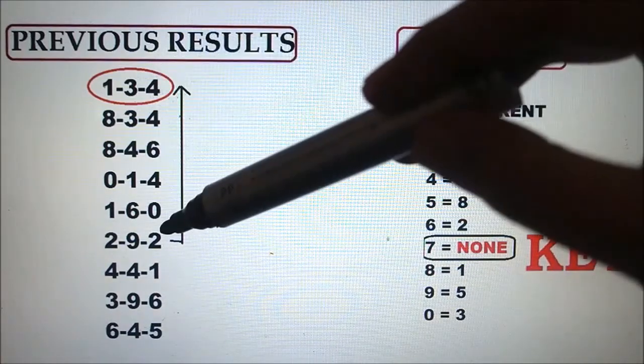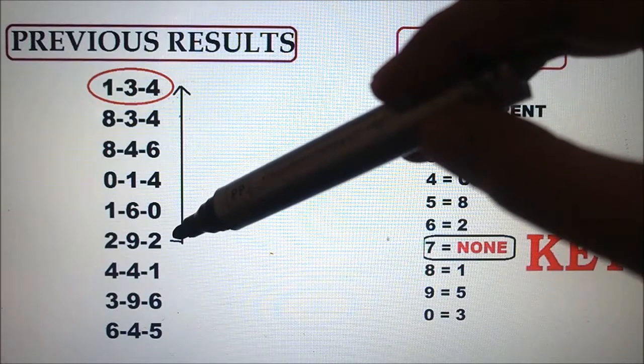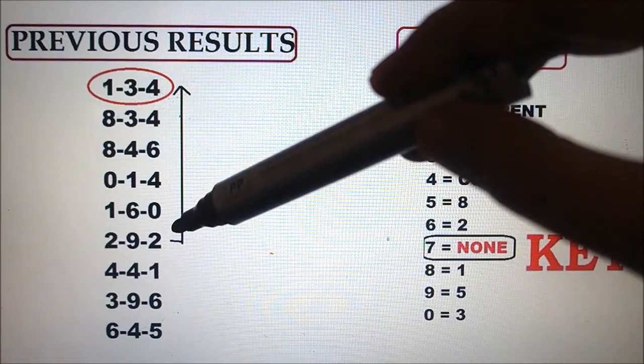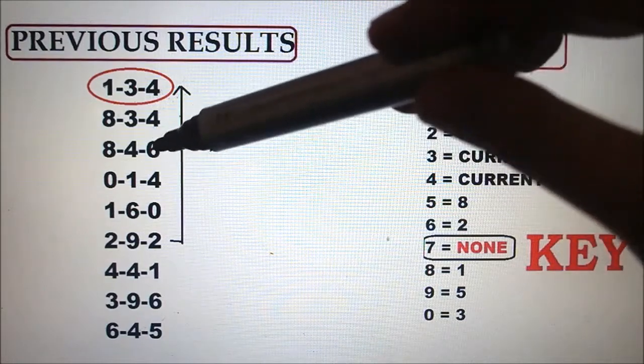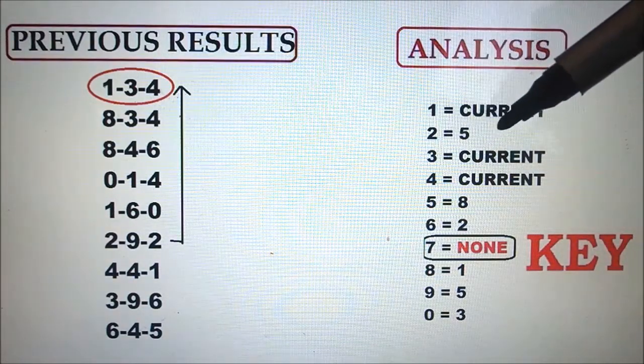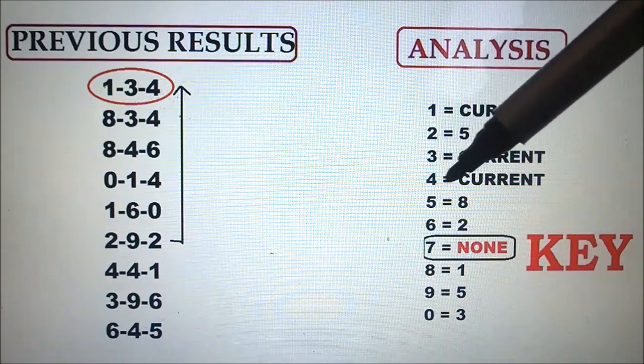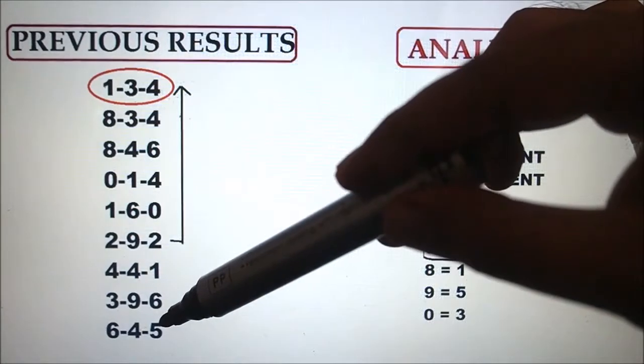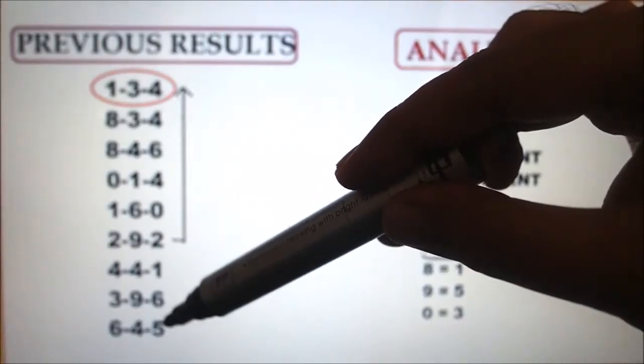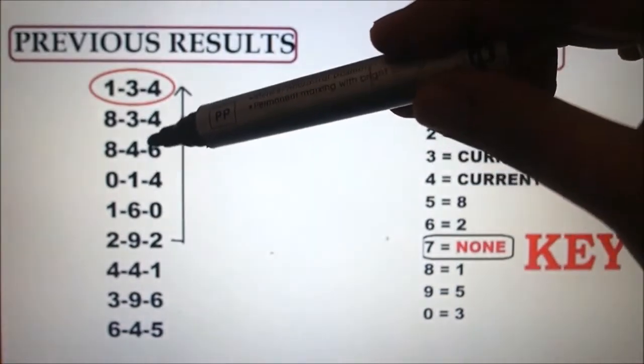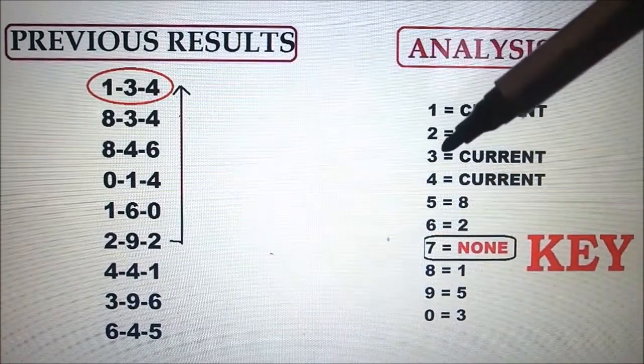So you will count upward again to find the skip, on how many skips it made. 1, 2, 3, 4, 5. So three, current. Four, current. Five, eight. So we locate the number 5. So this is the number 5, so we will count upward 1, 2, 3, 4, 5, 6, 7, 8.